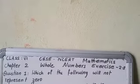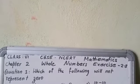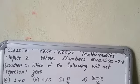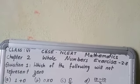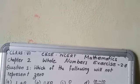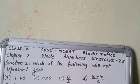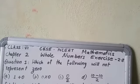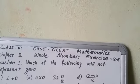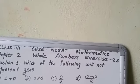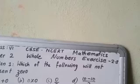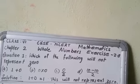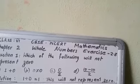The first question: Which of the following will not represent 0? They are showing 1+0. If we add 1+0 we will get 1, so that is the answer. 0×0 will definitely represent 0. 0÷2 is definitely 0. (10-10)÷2 is again like 0÷2. So the answer is 1+0=1, this will not represent 0.